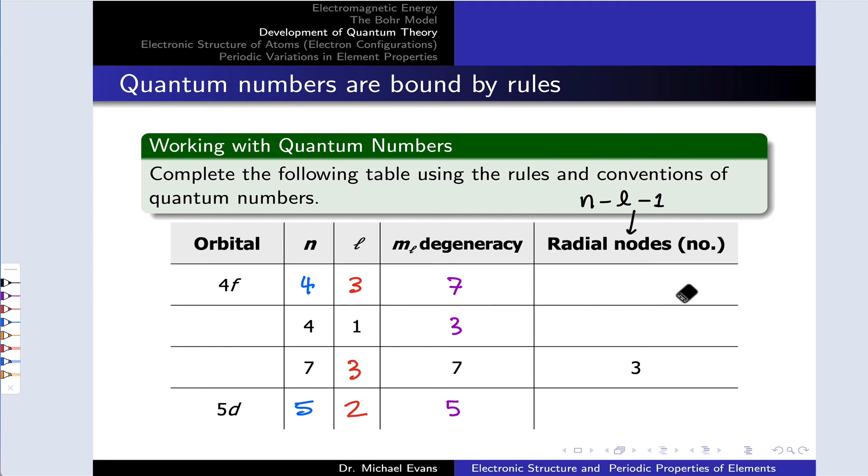Now that we have all the n and L values down, we can calculate the number of radial nodes easily as n minus L minus 1. Zero radial nodes in the first case, 4 minus 3 minus 1. Two radial nodes in the second case, 4 minus 1 minus 1. Three in the third case, 7 minus 3 minus 1. And two in the final case, 5 minus 2 minus 1. And that's just applying this formula with the values we know.